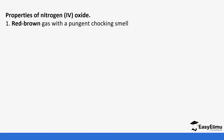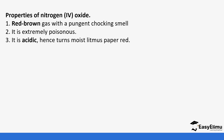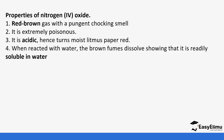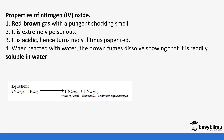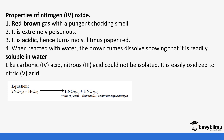Properties of nitrogen 4 oxide: it is a red-brown gas with a pungent, choking smell and is extremely poisonous due to its acidity. It turns moist blue litmus paper red, and moist red litmus paper remains red. When it dissolves in water, the brown fumes disappear showing it is soluble. Dissolving forms two acids: nitric 5 acid (HNO₃) and nitric 3 acid, known as nitrous acid (HNO₂).